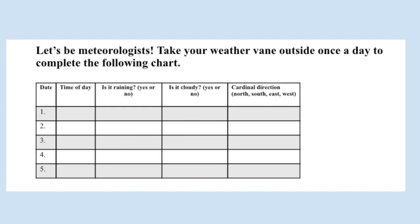At the bottom of your science handout, you'll find a chart that looks like this. Over the next few days, take your weather vane outside at least once a day and practice being a scientist using a weather tool to collect data. Pay attention if there is any rain, any clouds, and what direction the wind is blowing. Write down what you notice in your chart.